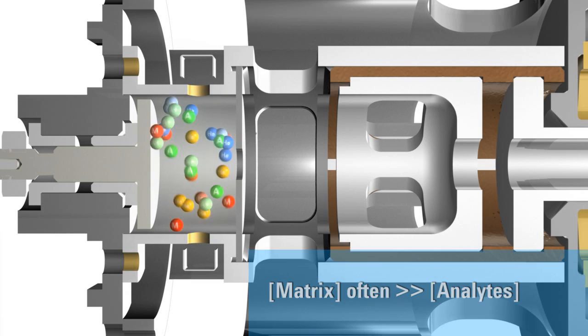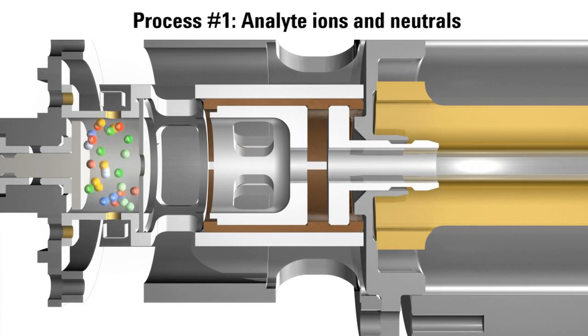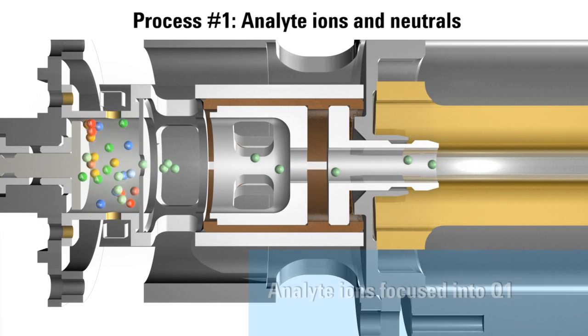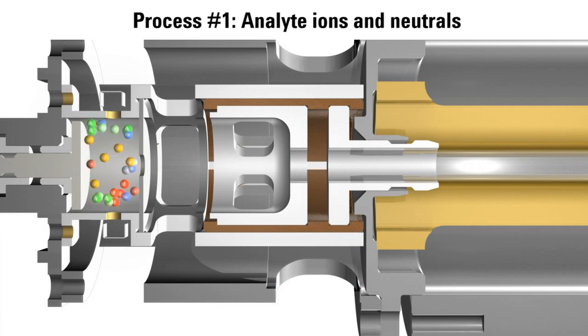To simplify the description, let's start with the analyte molecules and ions. Analyte molecules enter the vacuum source from the GC capillary column and begin bouncing off the hot surfaces of the source. Analyte ions are immediately extracted from the source and focused into the quadrupole mass filter.